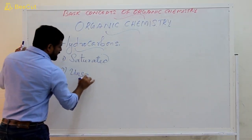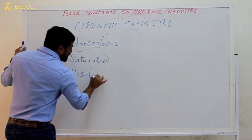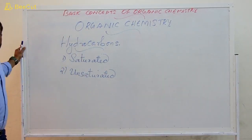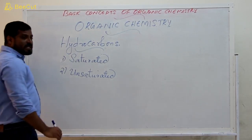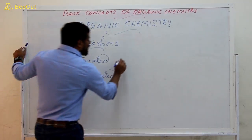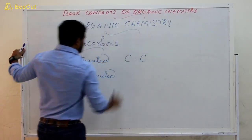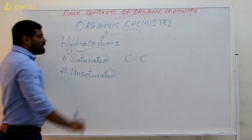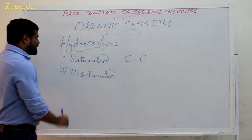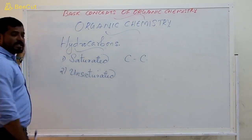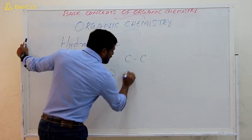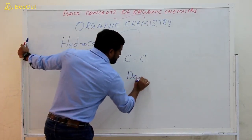The first category is saturated hydrocarbon and the second one is unsaturated hydrocarbon. Saturated hydrocarbons are those compounds which contain carbon-carbon single bond. In the case of unsaturated hydrocarbons, carbon-carbon double bonds or triple bonds are present.